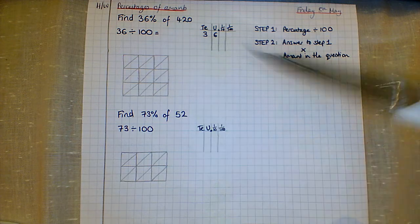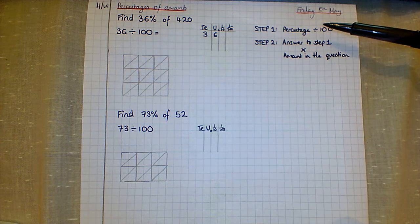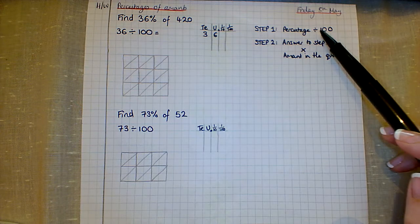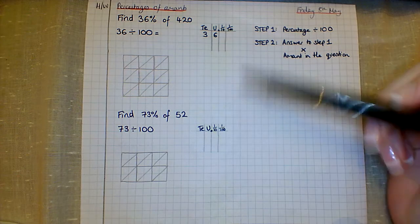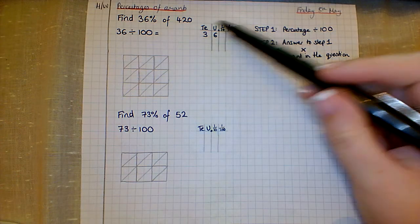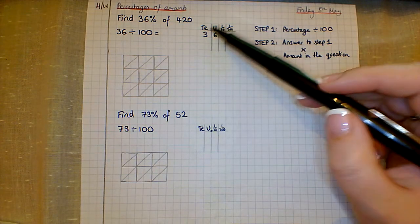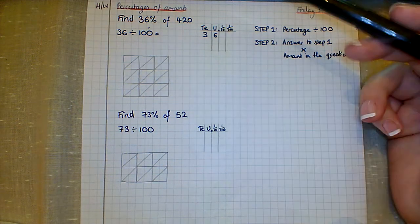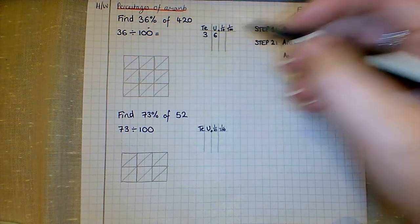For every single question there are two basic steps. Step number one is you take your percentage from the question, which in this one is 36, and divide that number by 100. Some of you might be able to do it automatically, but if you can't, remember when we're dividing by 10, 100, or 1000, we can use our place value column. I've pre-drawn my little grid here and put my 3 in the tens and the 6 in the units because that's how we tend to write 36.